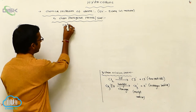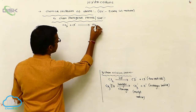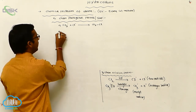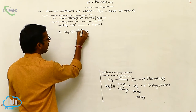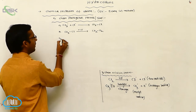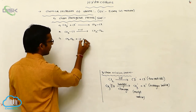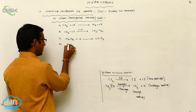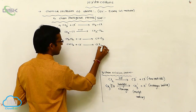So this methyl radical is interacted with chlorine radical and gives CH3Cl. This CH3Cl is again reacted with another chlorine radical and gives CH2Cl2. And this CH2Cl2 is reacted with chlorine radical and gives CHCl3. Next, this CHCl3 is reacted with chlorine radical and gives CCl4.